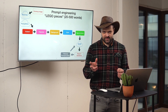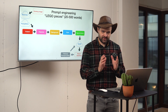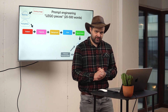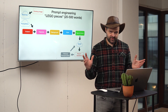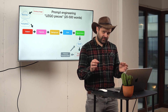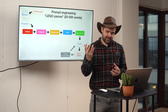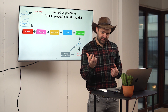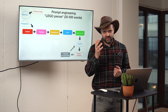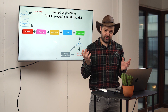Prompt engineering for image models is different from language models. The main difference is there are not 2,000 words — only 20 to 500 words. There's a very limited amount of words you can use, but you need to use as much as you can. The more descriptive the input, the better the output. You can use an existing image for prompt sourcing, or use Prompt Hero, a website with many prompts you can select from.